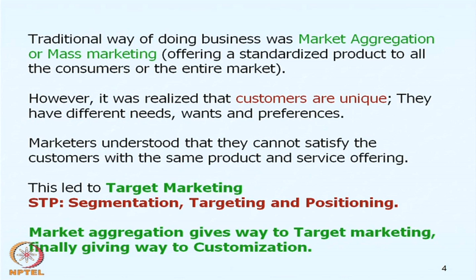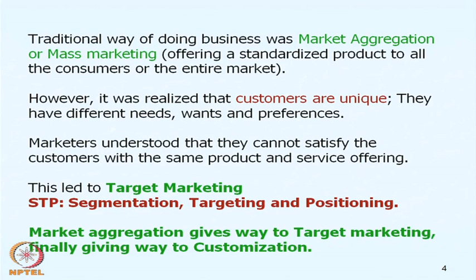The traditional way of doing business was mass marketing, also called mass aggregation, where consumers were offered a standardized product. The entire market was offered one single standardized offering by the marketer. However, as time grew, it was realized that customers are unique in themselves. They have different needs, wants, preferences, backgrounds, and characteristics in terms of geography, demography, psychographics, and social influences. This led to the concept of target marketing or STP — segmentation, targeting, and positioning.